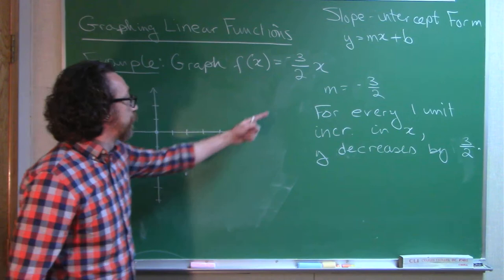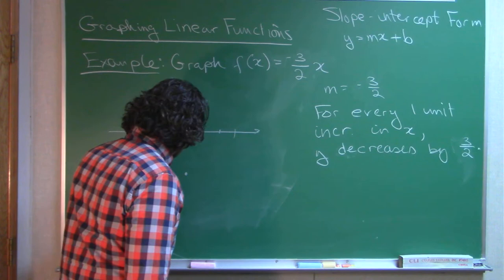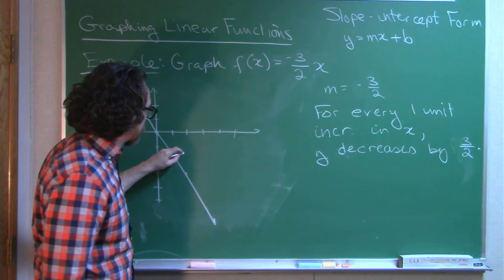So over two, down three. That gets you to your second point, and you've got your graph.